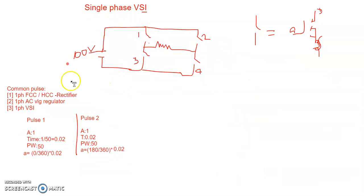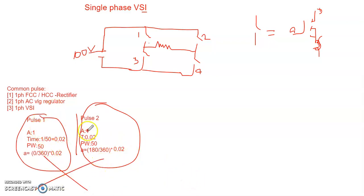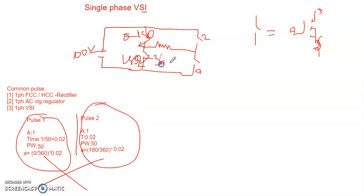So this is the method regarding the output current and output voltage waveforms — output voltage is the same in both cases. To summarize: Mode one is the forward direction (switches one and four), Mode two is the reverse direction (switches two and three). Pulse one is on from 0 to 180 degrees; pulse two is on from 180 to 360 degrees. This is how you develop pulse one and pulse two for the single-phase voltage source inverter.